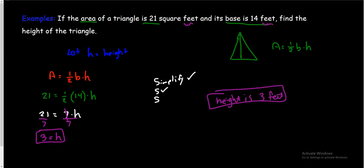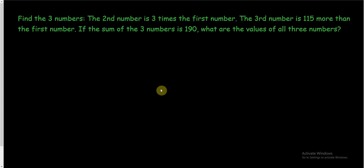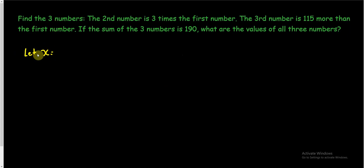Let's look at the next word problem. This one wants us to find three numbers — this might be a little troubling, but let's see if we can handle it. It's very wordy, so let's read it first just to get the feel of it. The second number is three times the first number. The third number is 115 more than the first number. If the sum of the three numbers is 190, what are the values of the three numbers? How many variables have we been defining? Just one at a time — we're only going to be able to find one variable at a time.